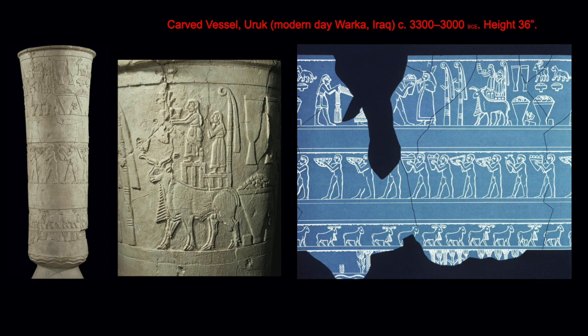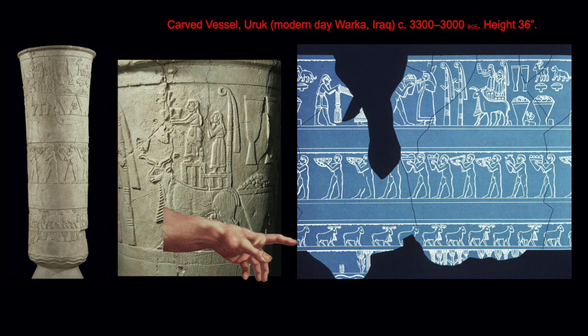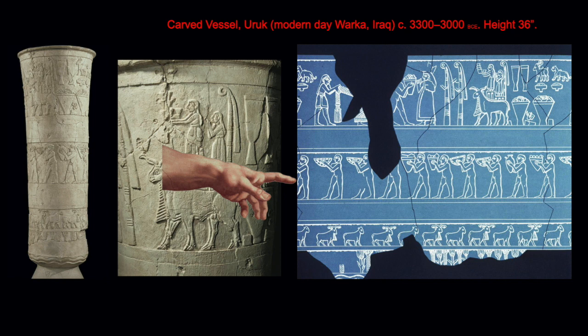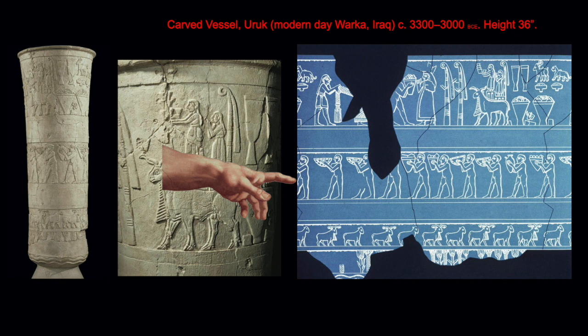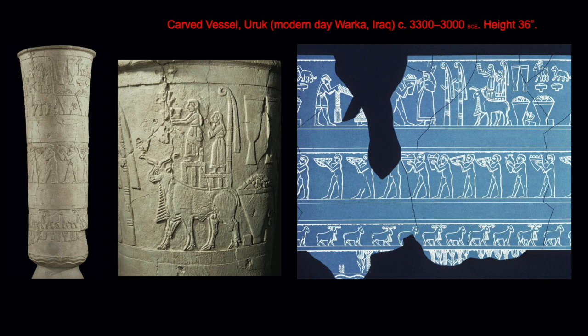Also found near the head was an alabaster vase with different registers or bands of images. From the bottom up: water, crops, animals, then men bearing offerings, then a narrative scene at the top. In that scene you can see Inanna's temple indicated by two bunches of reeds, piles of gifts or offerings, a platform for sacrifices, and Inanna herself wearing a crown with a companion. This deals with the cult procession at the time of the new year — an entire line of people offering gifts to the god as they ascend the stairs to the temple.